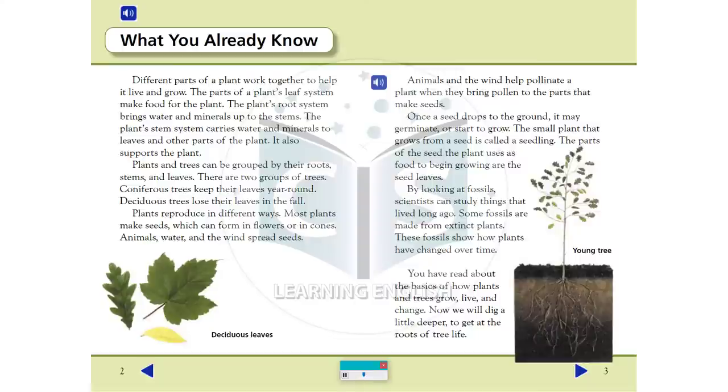The small plant that grows from a seed is called a seedling. The parts of the seed the plant uses as food to begin growing are the seed leaves. By looking at fossils, scientists can study things that lived long ago. Some fossils are made from extinct plants. These fossils show how plants have changed over time.